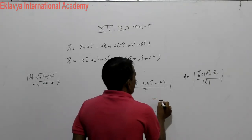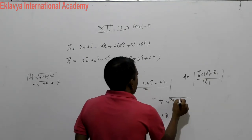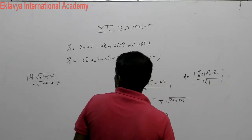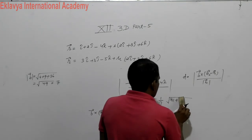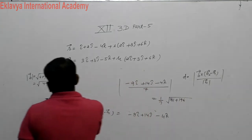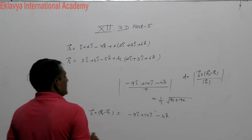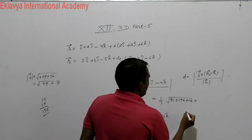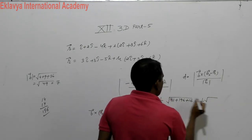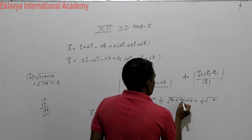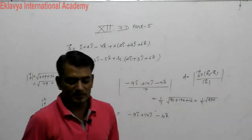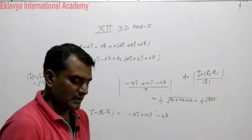Taking 1 upon 7 outside, we compute the magnitude: 9 squared is 81, 14 squared is 196, 4 squared is 16. Adding: 81 plus 196 plus 16 equals 293. So the shortest distance between the two parallel lines is root 293 upon 7.